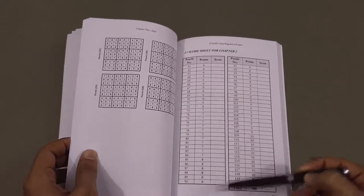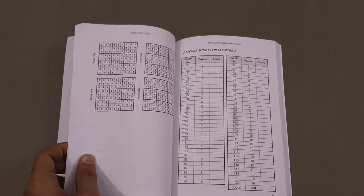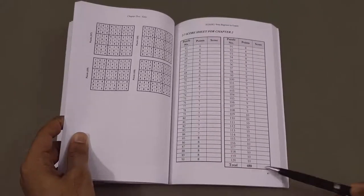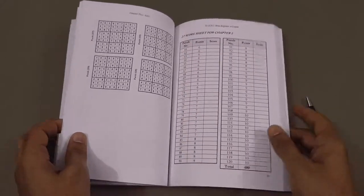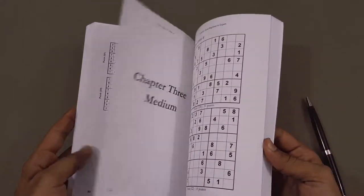You do the same thing for all of the puzzles. And then for the whole chapter, you get a total score. You do the same thing for all of the chapters.